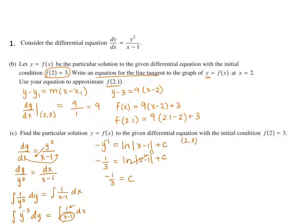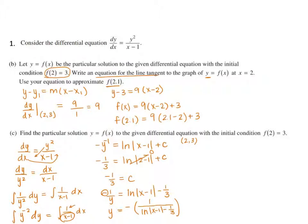Now we're ready to write our equation. We go back to negative 1 over y equals the natural log of |x minus 1| plus c, which is negative 1/3. Then you can rearrange this and solve for y. There's a negative, so I'm going to move that negative over and flip everything. So that's going to be y equals negative 1 over the natural log of |x minus 1| minus 1/3.